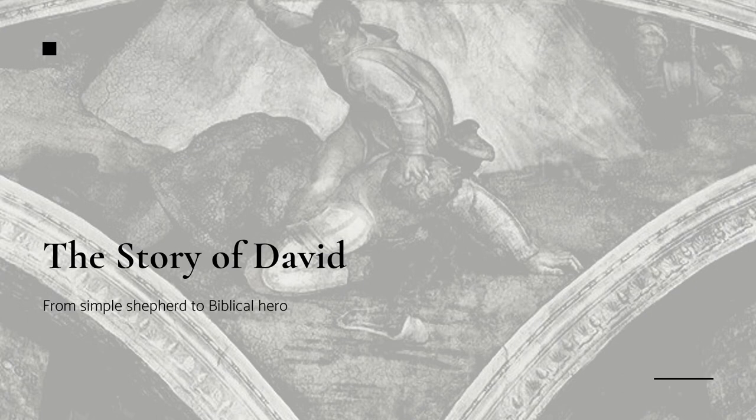Before we delve into the art, it is important to understand the story of David. He was born to a large family, the youngest of eight sons. His family were shepherds. When David was a teenager, the prophet Samuel anointed him as the next king of Israel. He was introduced to the current king, Saul, and became his personal musician.